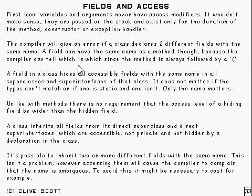Now, the compiler will give an error if a class declares two different fields with the same name. So you can't have one class declaring two different fields with the same name. A field can have the same name as a method, though, because the compiler can always tell which is which since a method is always going to be followed by a left bracket.